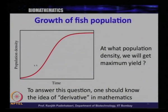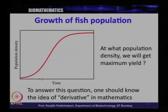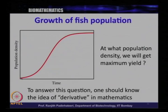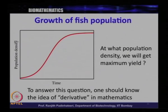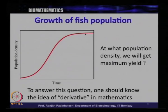As a person doing fish farming, your aim is that you should have maximum yield. The question comes to your mind: how can we get maximum yield? You are doing an experiment of fish growth and you get a particular curve as we see in the graph. This is a typical growth curve. What is plotted here is population density on the y axis versus time.